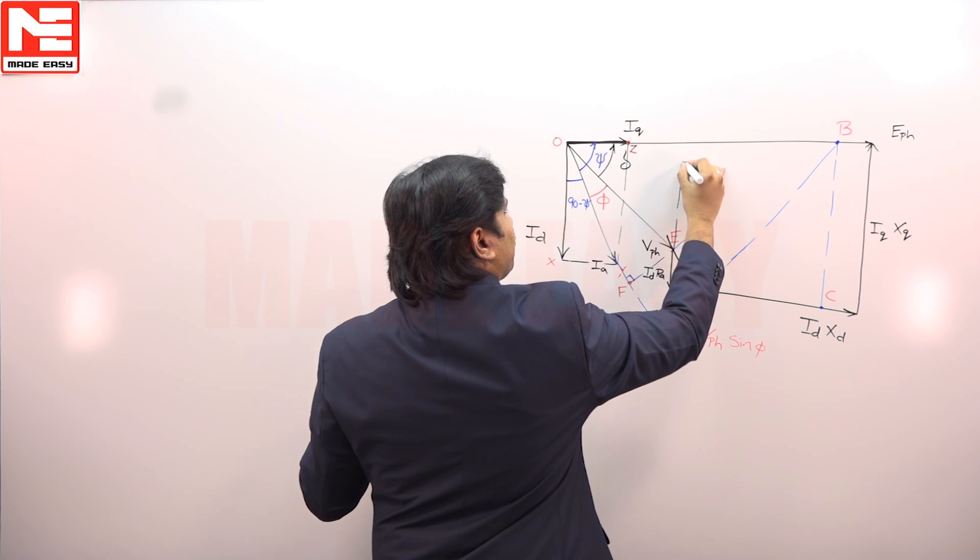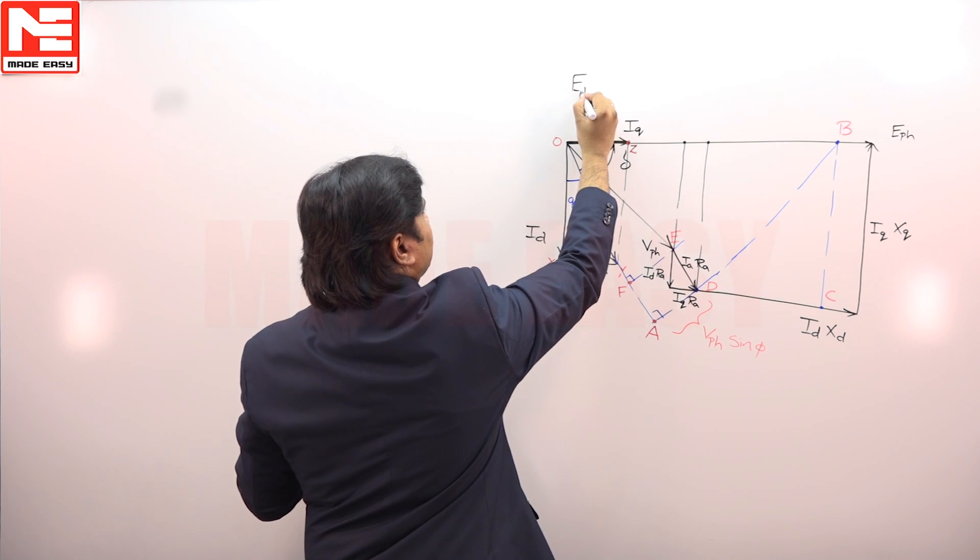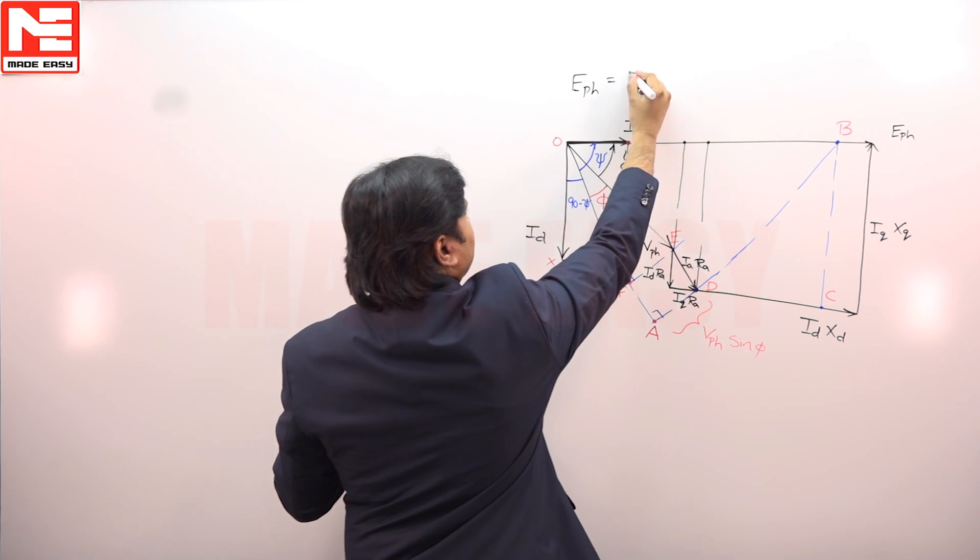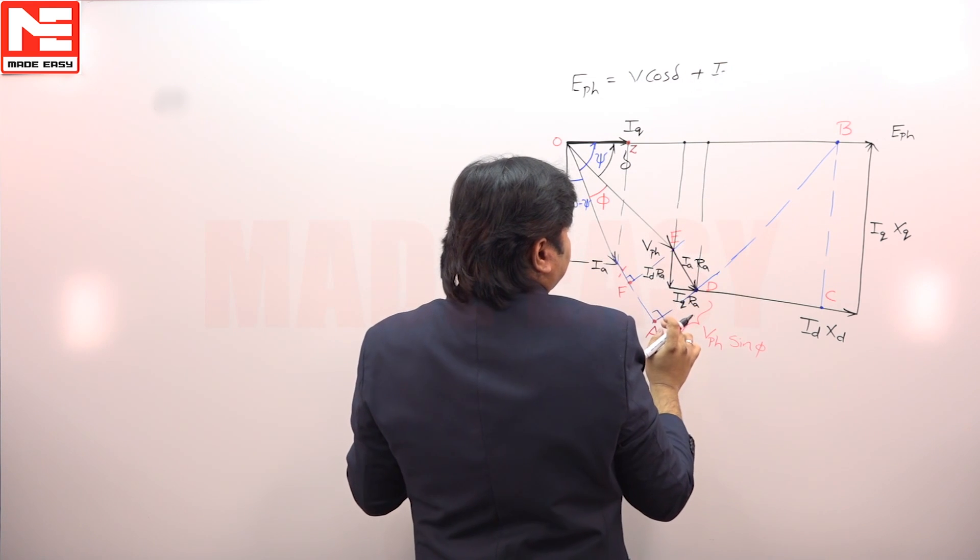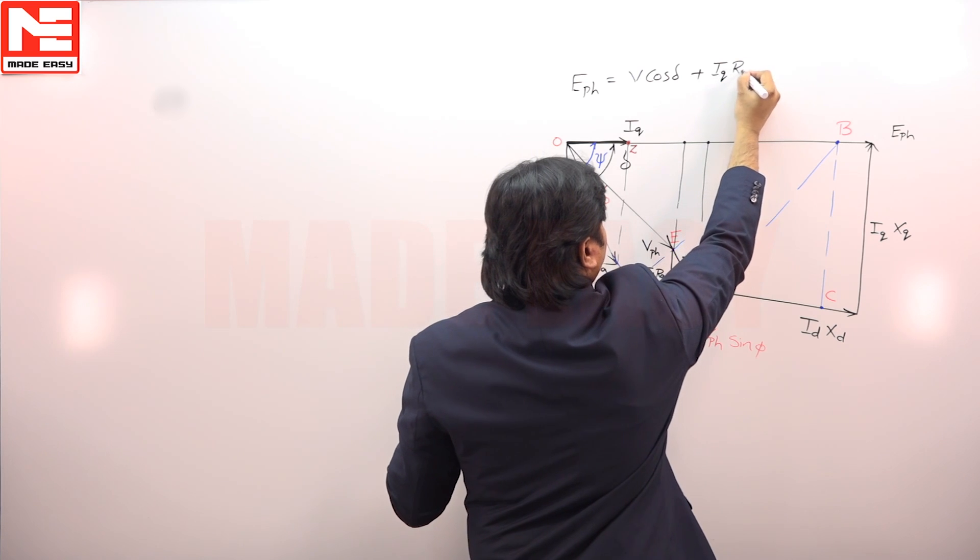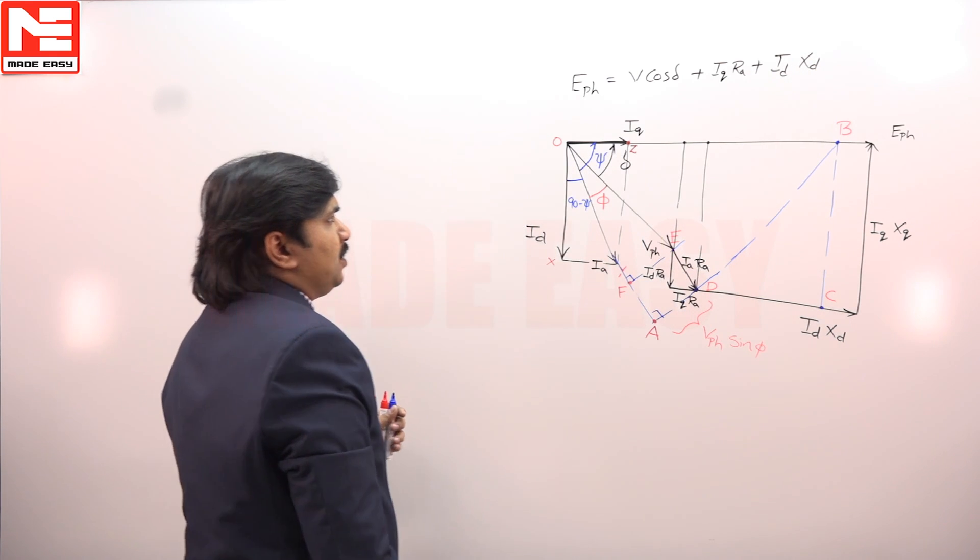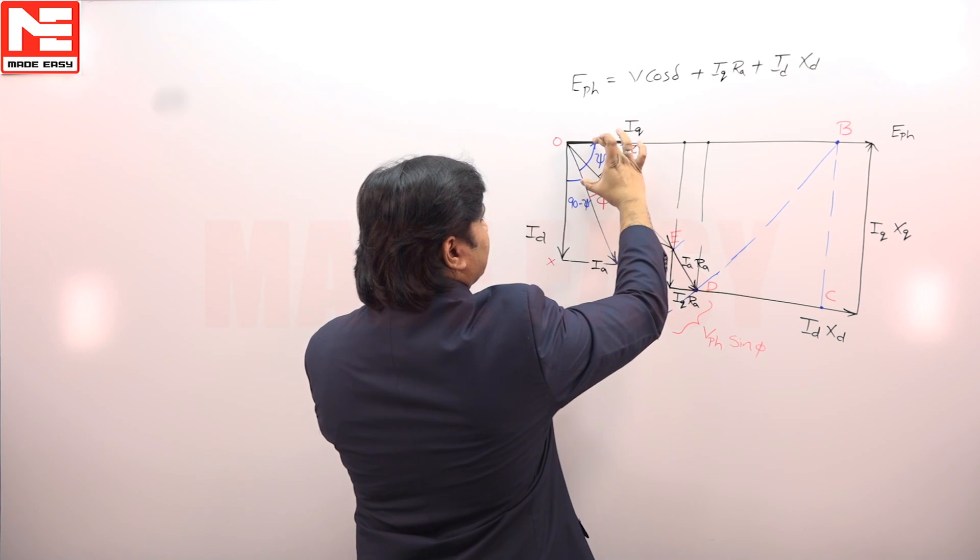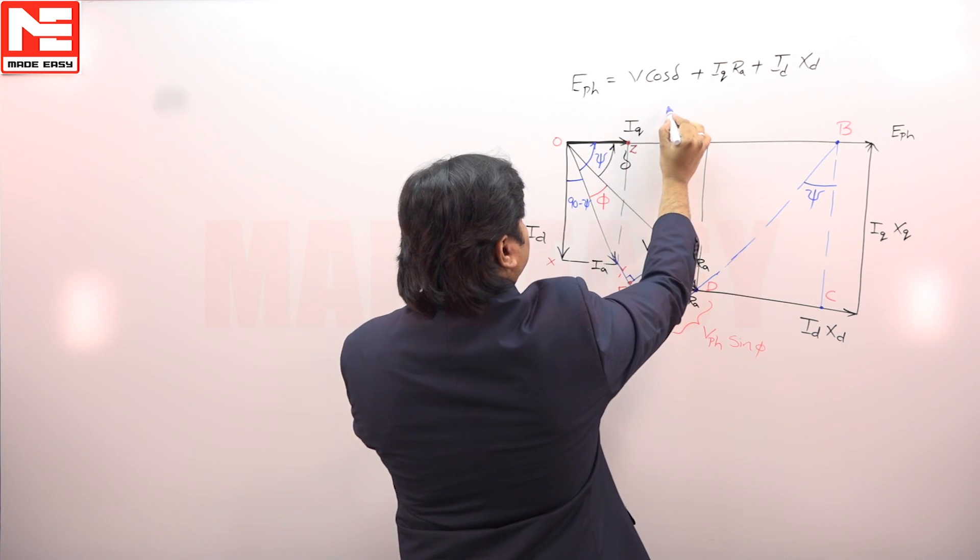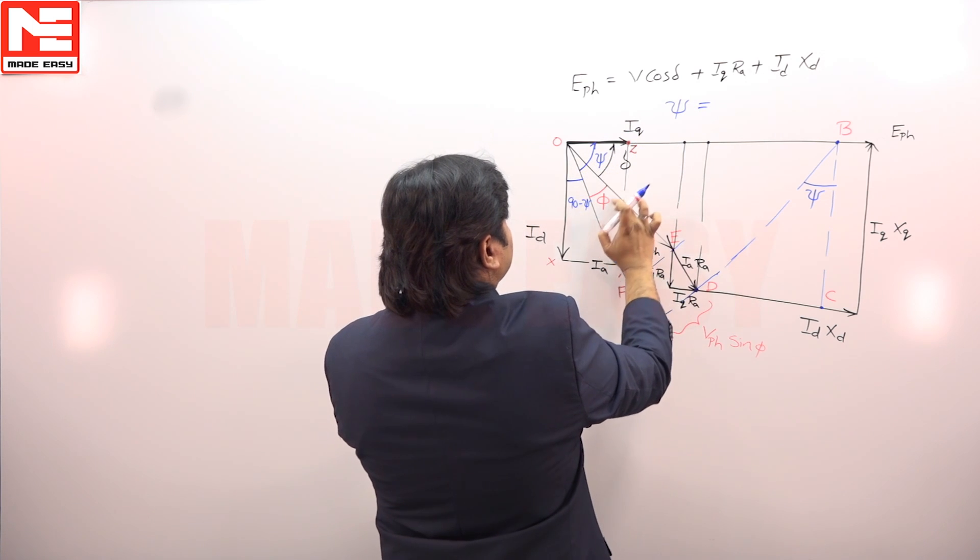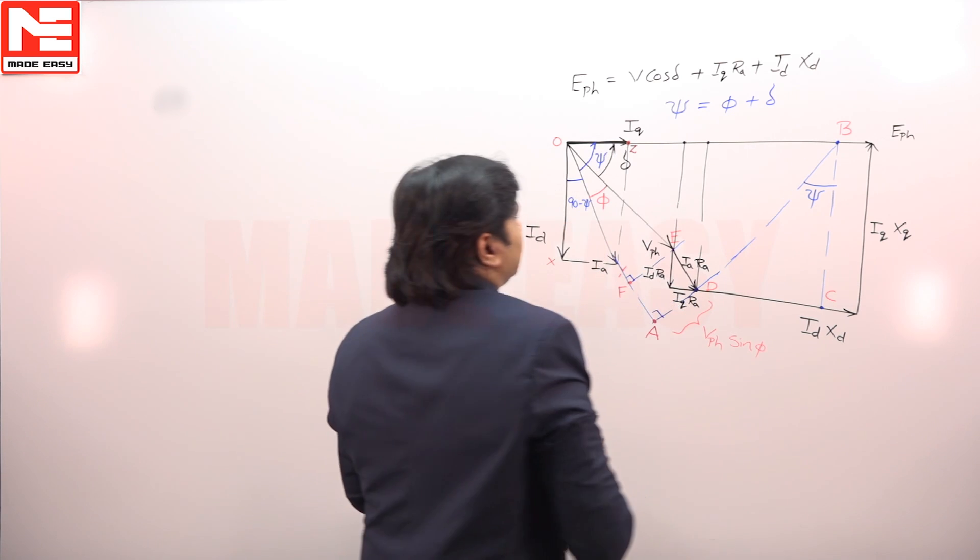Now, we can develop E phase is equal to V cos delta plus this small one, IQ RA plus ID XD. Again, according to geometry, this is psi. As this is 90, this is also psi. Psi is phi plus delta. Phi is power factor angle, delta is torque angle or load angle or power angle.